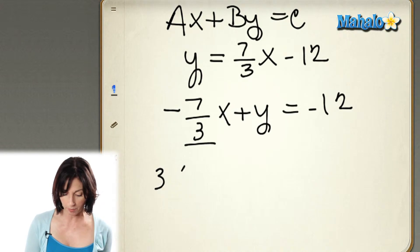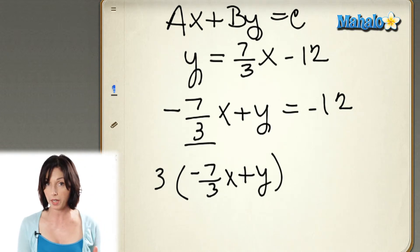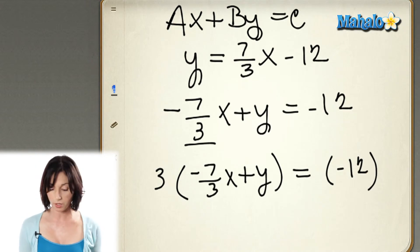So we're going to take 3 times negative 7 thirds x plus y, and I'm multiplying that whole thing by 3. And then on the other side, I have to do the same thing to the other side of the equation, so I have to multiply negative 12 by 3 too.